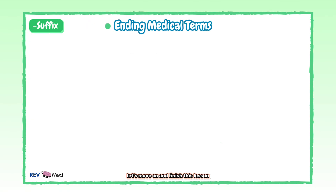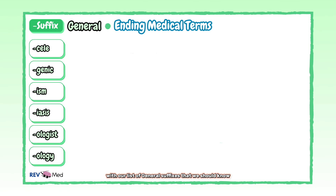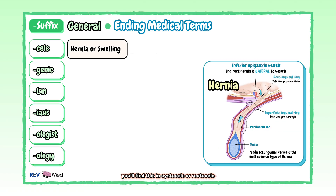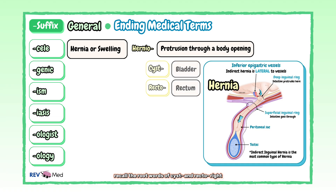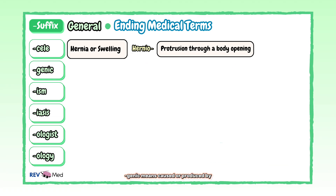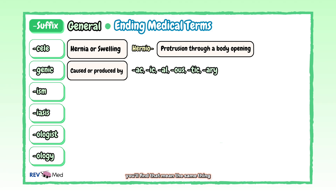Let's move on and finish this lesson with our list of general suffixes that we should know. "-Cele" is for hernia or swelling. You'll find this in cystocele or rectocele. In herniocele, we have a protrusion through a body opening. Recall the root words of cyst and recto. "-Genic" means caused or produced by. There are a variety of suffixes that mean the same thing: "-ac", "-ic", "-al", "-ous", "-tic", "-ary" — and these all mean pertaining to or related to in medical terminology.